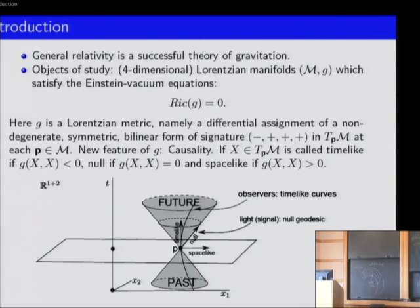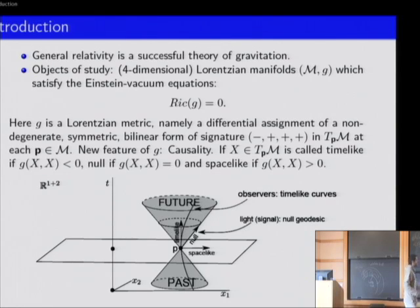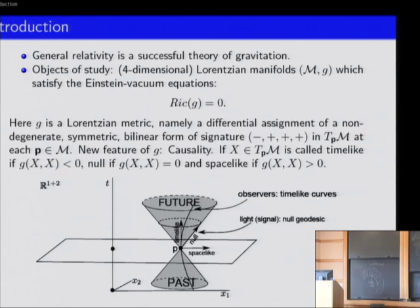In this picture, an observer would move on a time-like geodesic — one for which the tangent at each point is a time-like vector — whereas light, or in other words signals, propagates along null geodesics, that is to say geodesics where the tangent vector is null. Of particular importance is to understand the structure of all null geodesics, because that tells us how signals propagate in the universe.